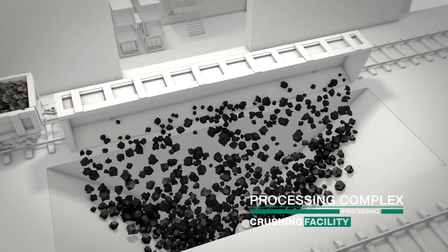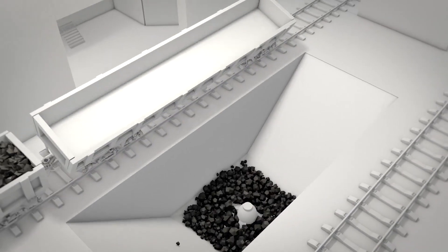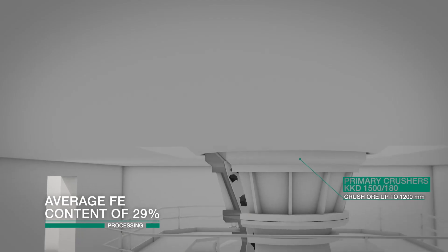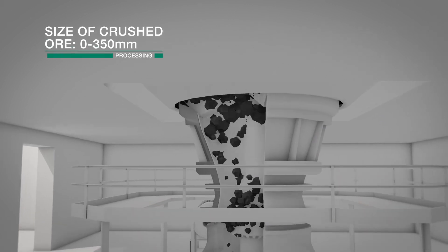Ore is delivered from the mine to the crushing facilities, where there are two primary crushers which can crush ore up to 1,200 millimeters in diameter.